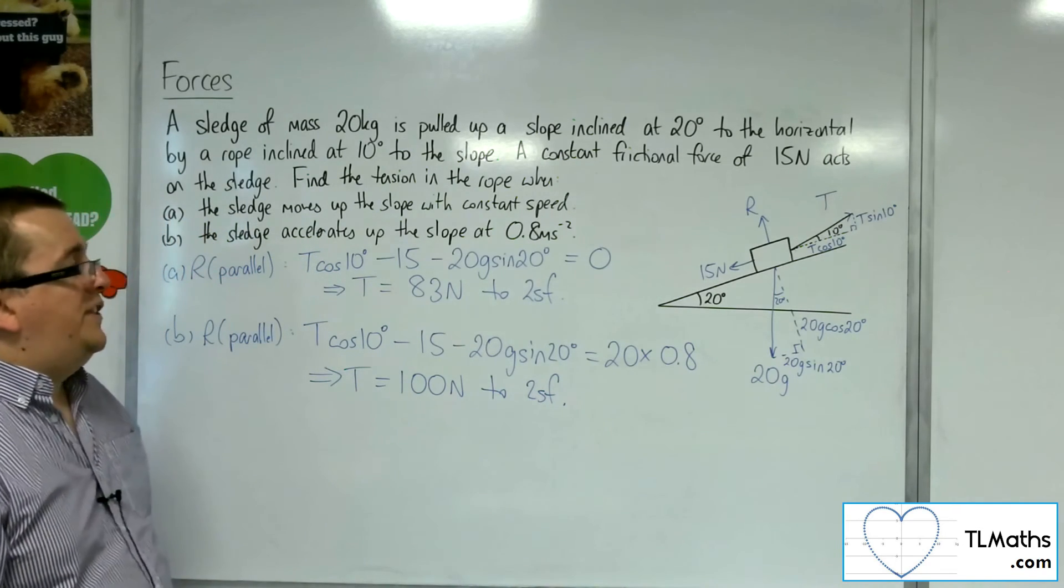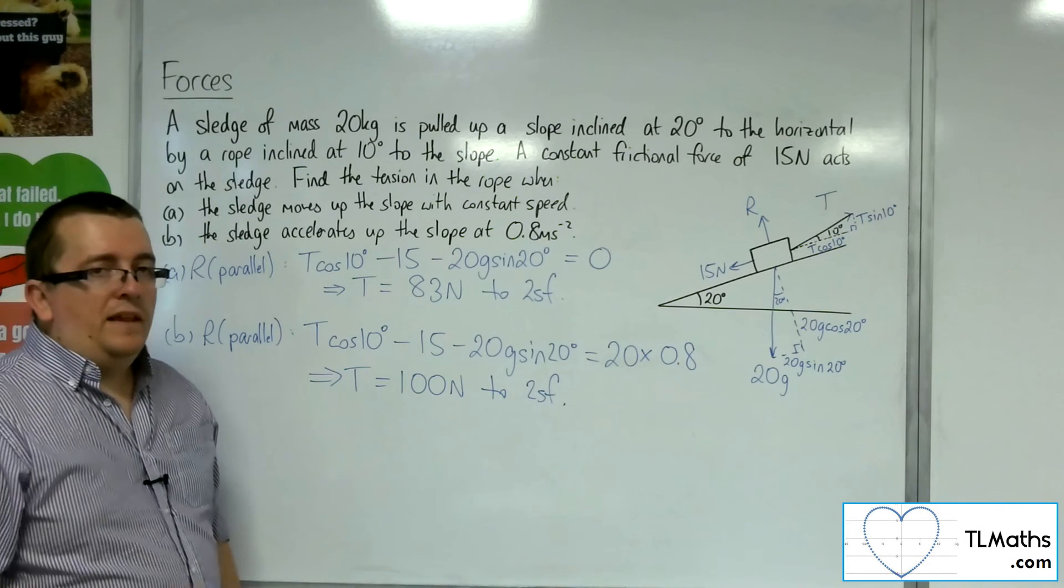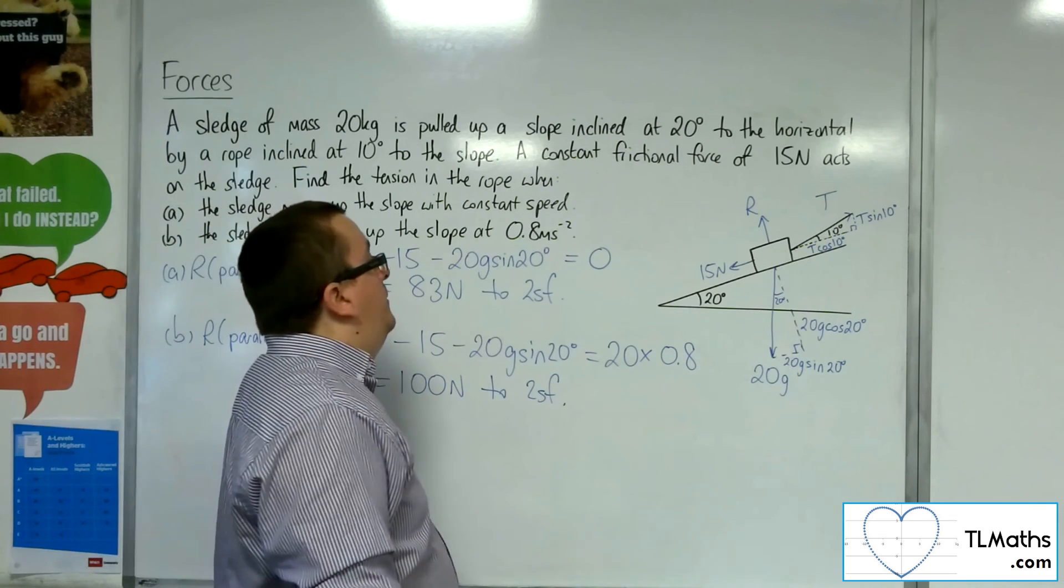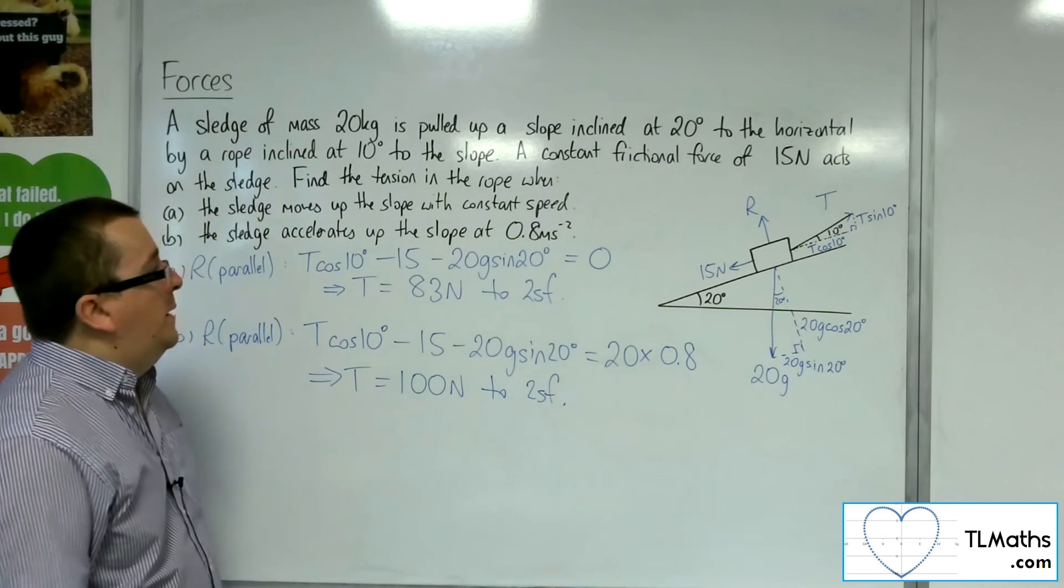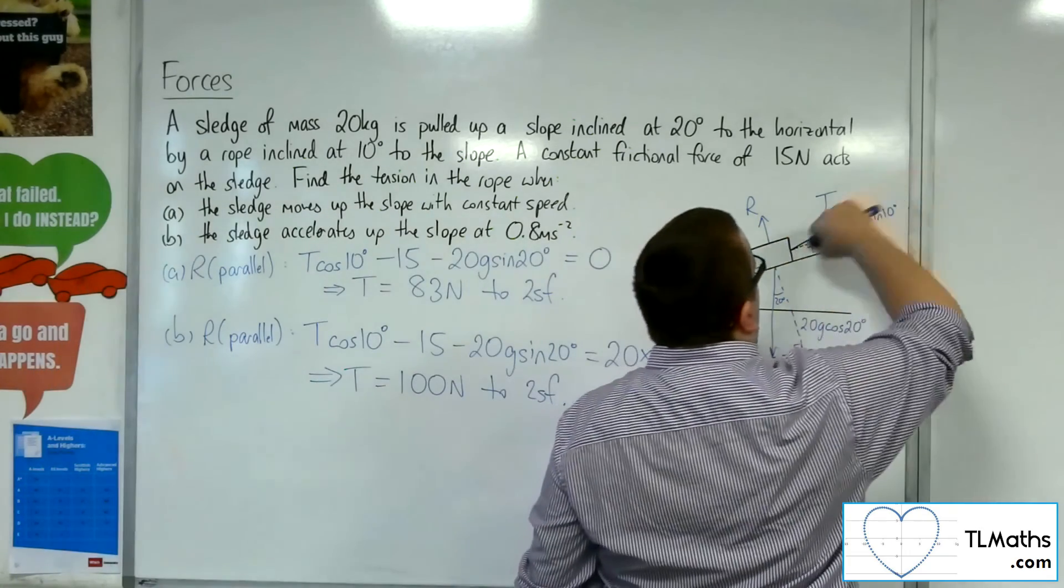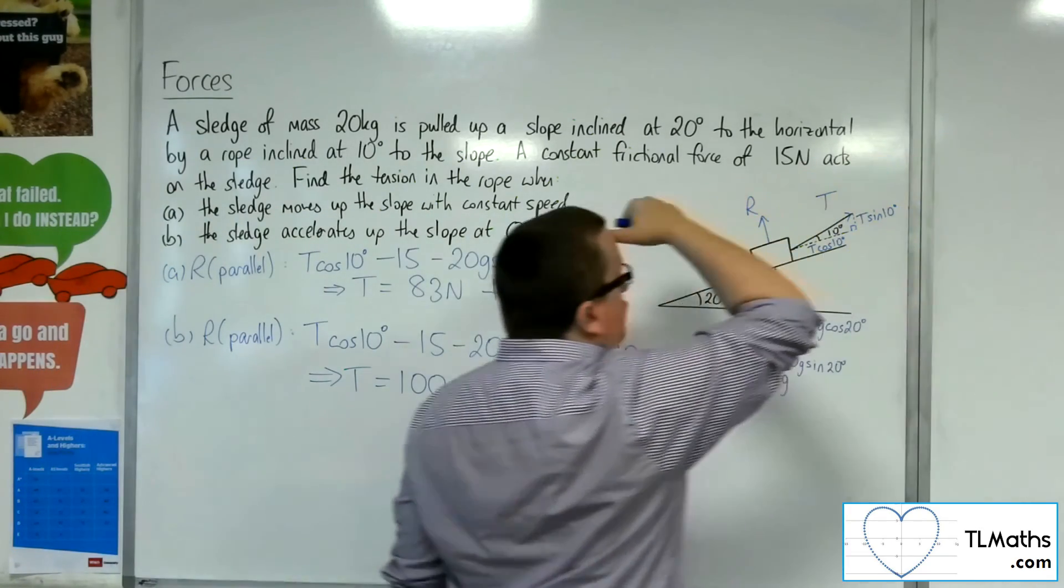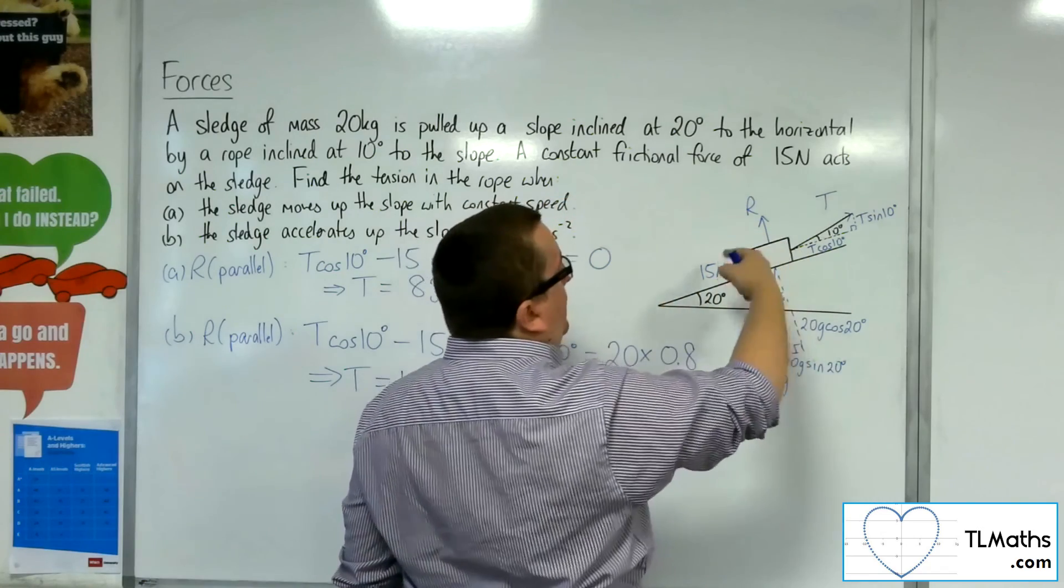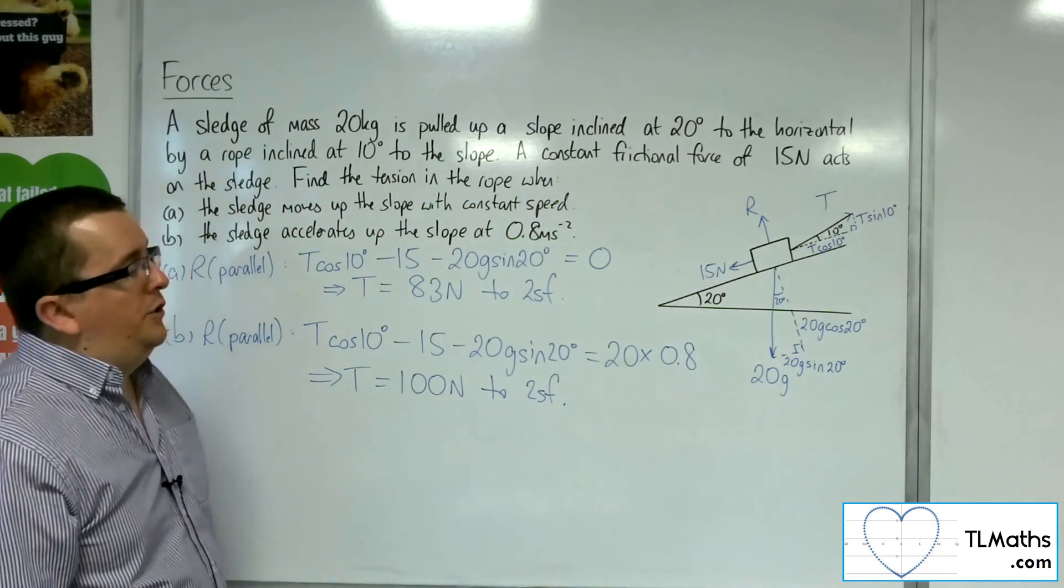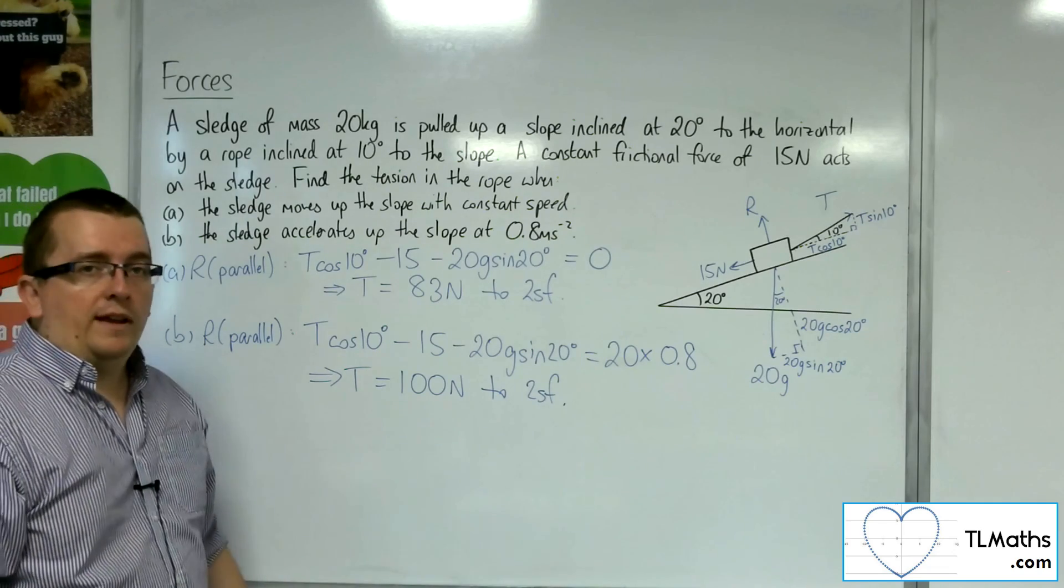So you can see that the tension is having to increase in order to be accelerating up the slope at 0.8 metres per second per second. This, however much you're pulling that rope, has got to exceed the frictional force and the weight that's working against it.